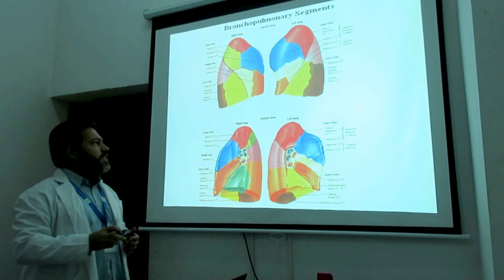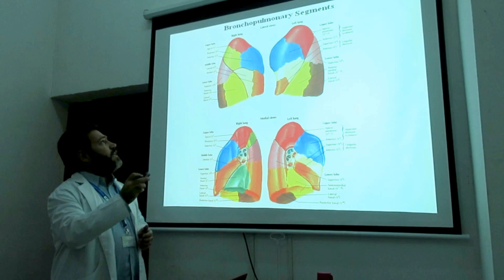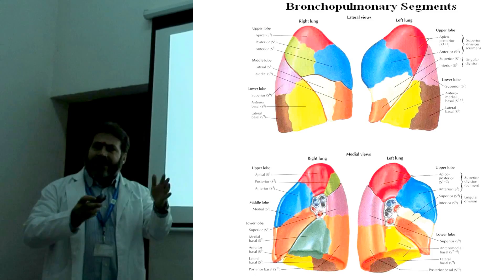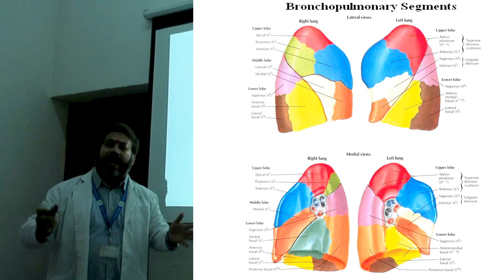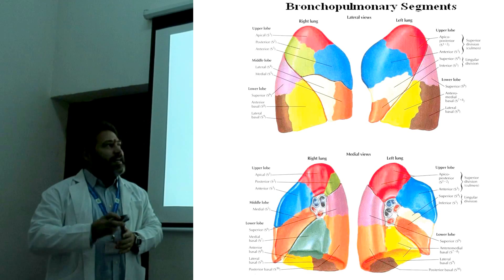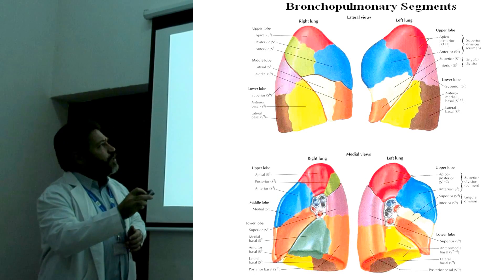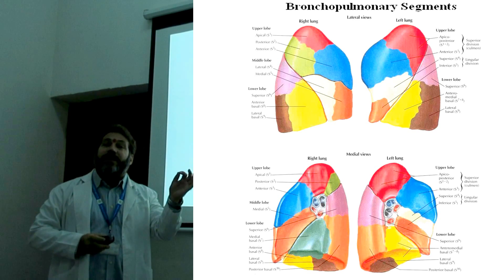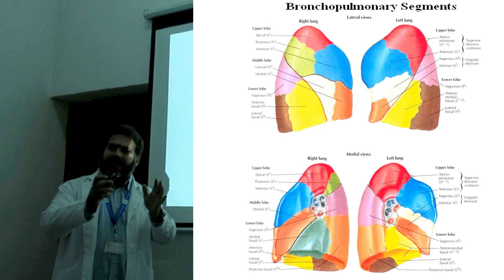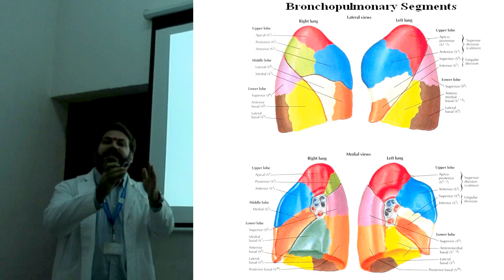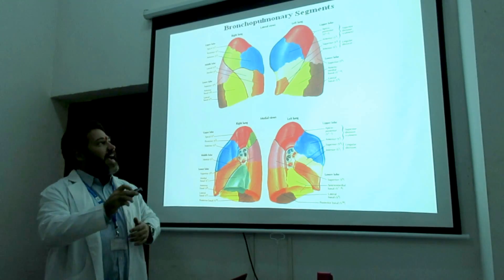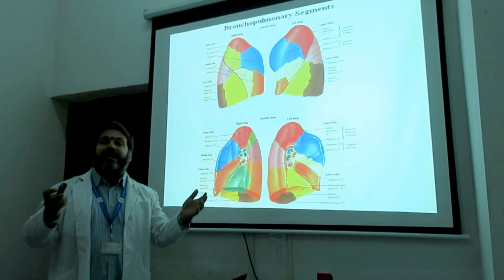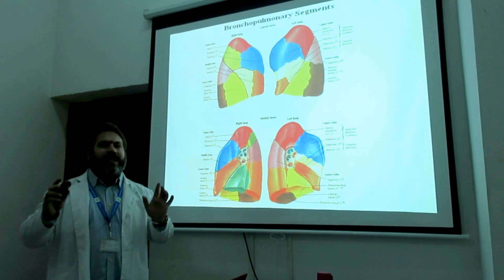This takes on even more importance when you consider the bronchopulmonary segments. Each of the lungs is divided into ten bronchopulmonary segments. Each of these bronchopulmonary segments — the subsections — in yoga we call them the vibhaga. Vibhaga is a section, and we have these ten sections in the right lung and ten in the left lung. So both lungs are equal.